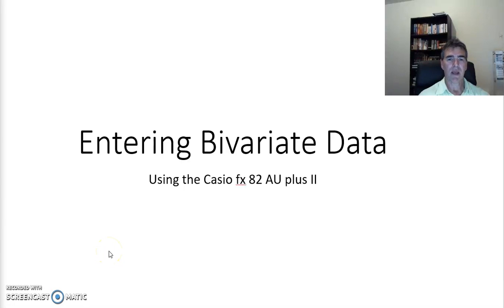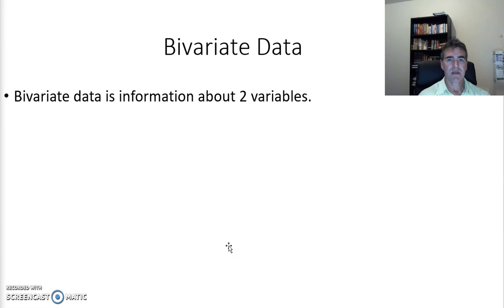Today we're going to look at how to enter bivariate data into our Casio calculator. It's a fairly simple process if we know what we're looking for. What is bivariate data? It's information about two variables.